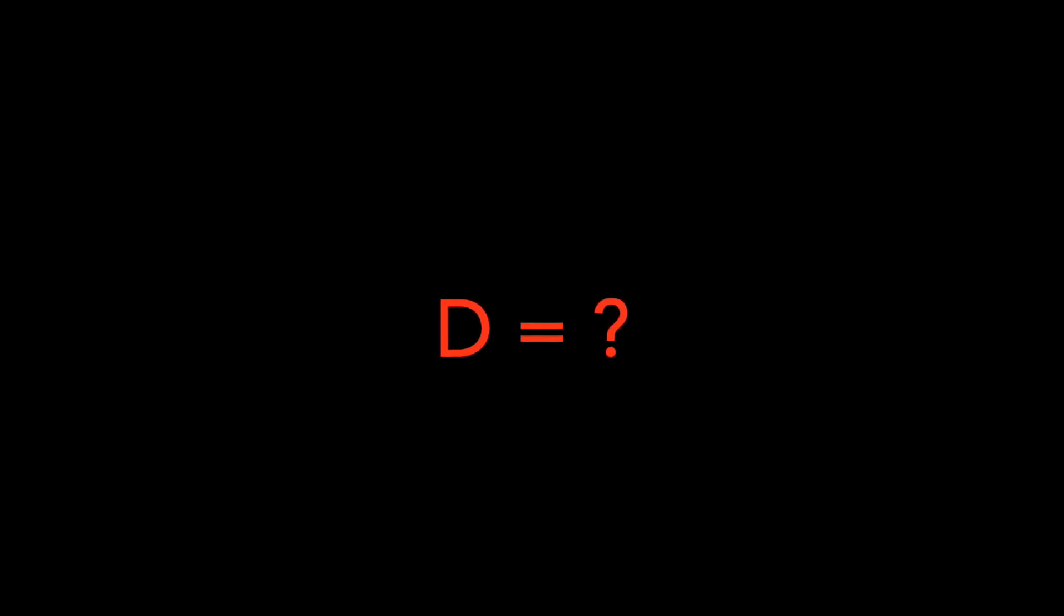But how do we do that? Actually, there is a formula to calculate D. It is D is equal to B by theta. In order to calculate distance between Earth and Moon, we have to divide the value of B by value of theta. You can see how simple that is.